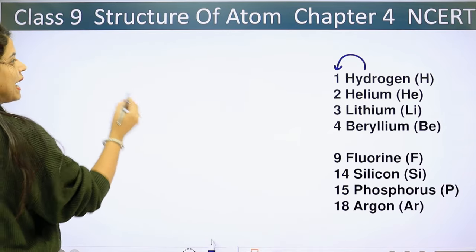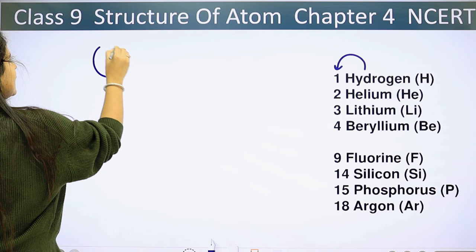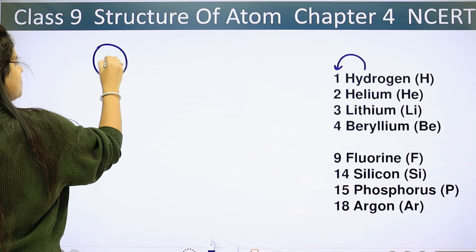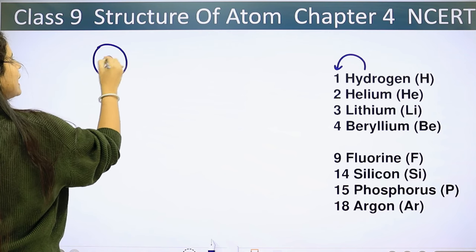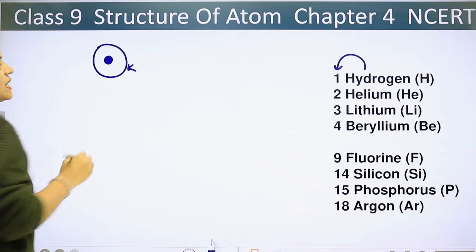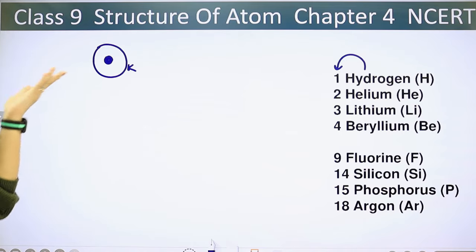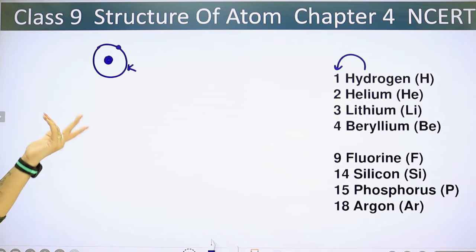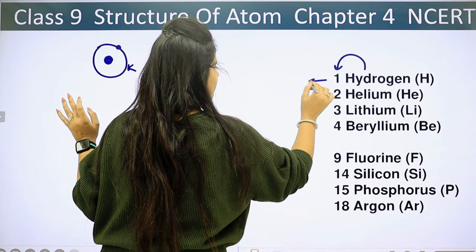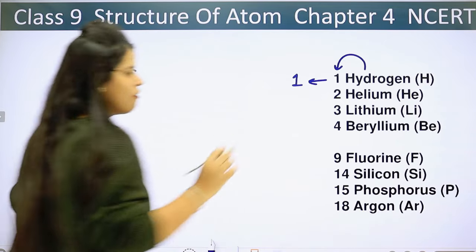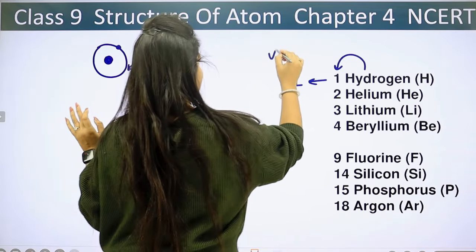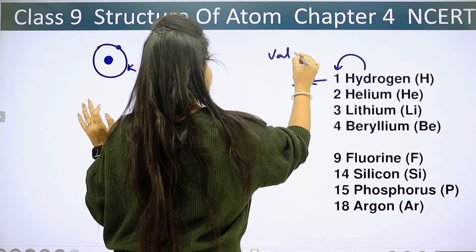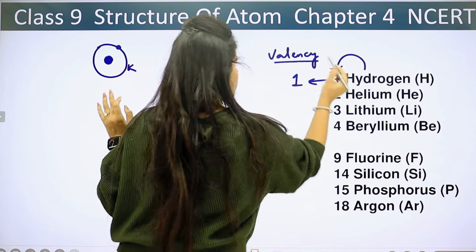For hydrogen, this is our nucleus. The first shell will be the K-shell, and K-shell can hold a maximum of 2 electrons. Hydrogen has only 1 electron in the K-shell. So we don't need to do anything further — the valence electrons are 1. That means hydrogen's valence is 1.